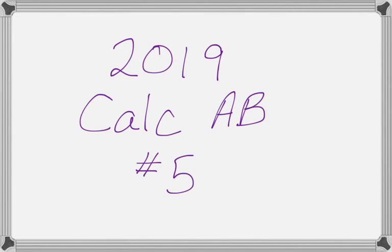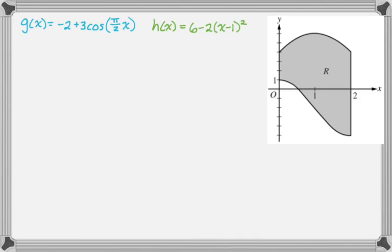Okay, this is number five from the 2019 Calc AB exam. And it's kind of like the area volume type problem. So non-calculator, and this is what we're given.